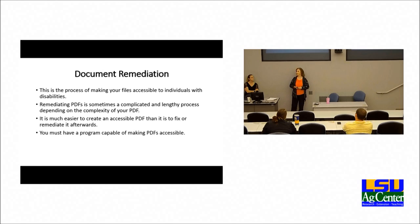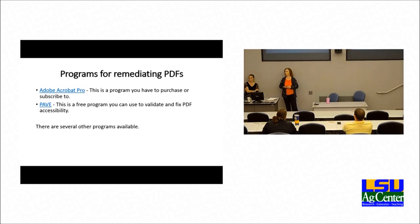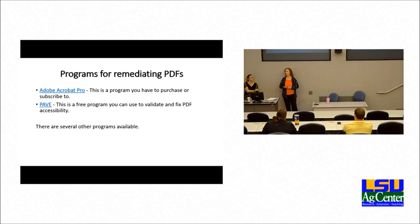You must have a program capable of making PDFs accessible. Programs for remediating PDFs include Adobe Acrobat Pro, which you have to purchase or subscribe to. There's also a free program called PAVE that you can use to validate and fix PDF accessibility. There are several other programs available, but these are the ones I've actually used or referred others to — and I've had a couple of people use PAVE successfully. But it's better to create the PDF accessible from the start than to try to fix it.